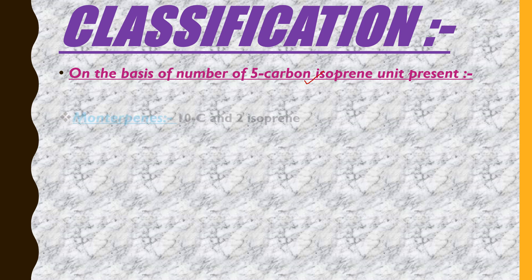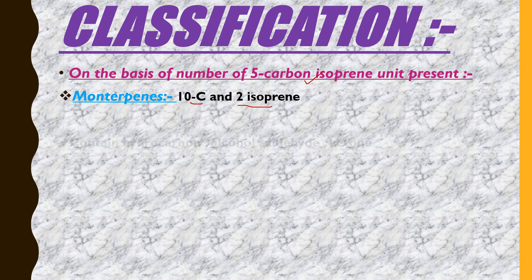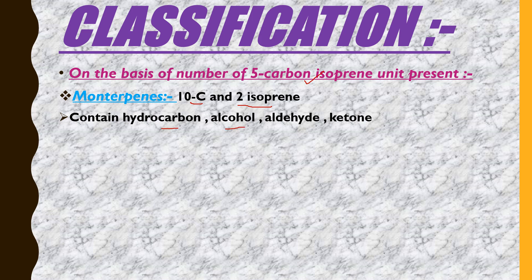Monoterpenoids contain 10 carbons and 2 isoprene units. Monoterpenoids can contain hydrocarbons, alcohols, aldehydes, and ketones as their functional group types.